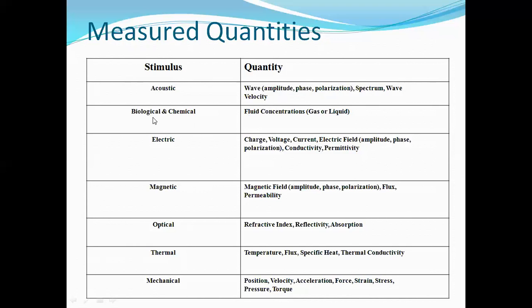In the case of biological and chemical parameters, clear concentrations such as gases or liquids has been monitored. In the case of electrical stimulus, the parameters such as charge, voltage, current, electrical field such as amplitude, phase polarization, conductivity, permittivity, capacity will be measured.